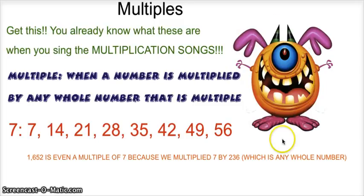And now we're gonna give you what multiples are of 7: 7, 14, 21, 28, 35, 42, 49, 56, and there's much more than that. And then we have 1652 is even a multiple of 7, because we multiply 7 by 236, which is any whole number.